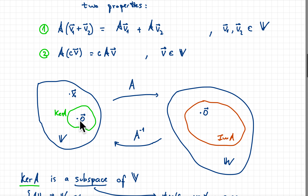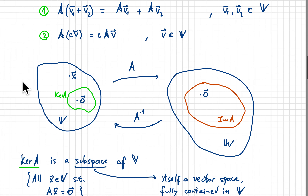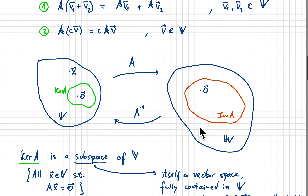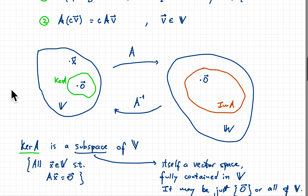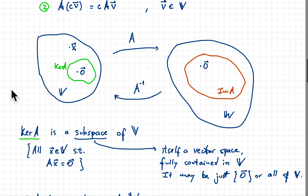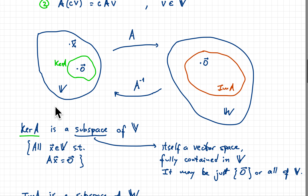A could also map not just zero onto zero, but a bigger set — not just the zero vector — onto zero. That's what we call the kernel of A. The kernel is a subset of V that is mapped onto zero by A. Under certain conditions, we will also have an inverse mapping, one that grabs vectors from W and recovers the original vectors in V.